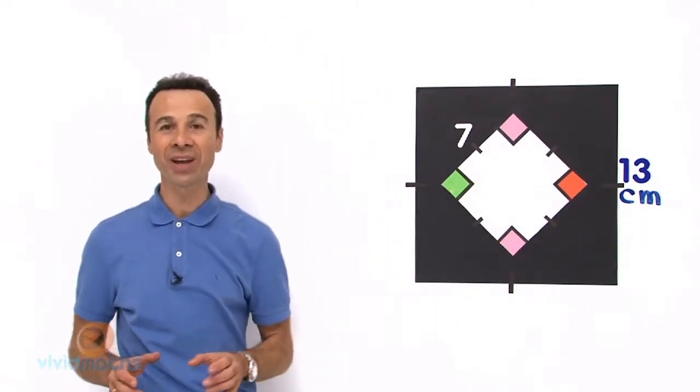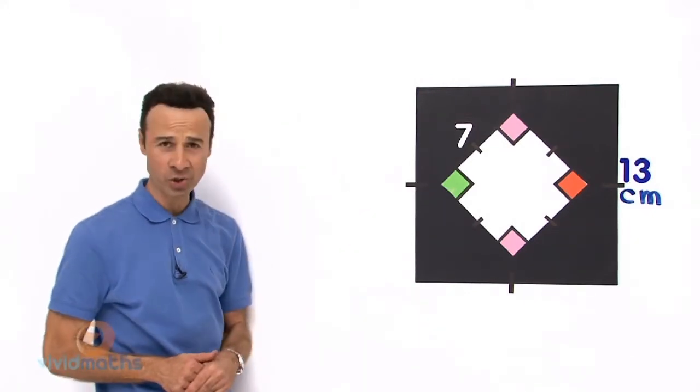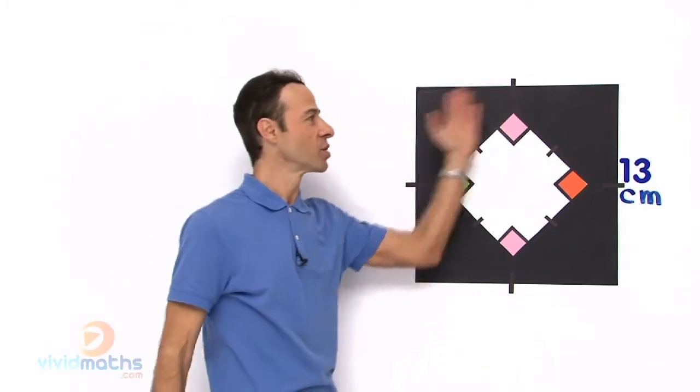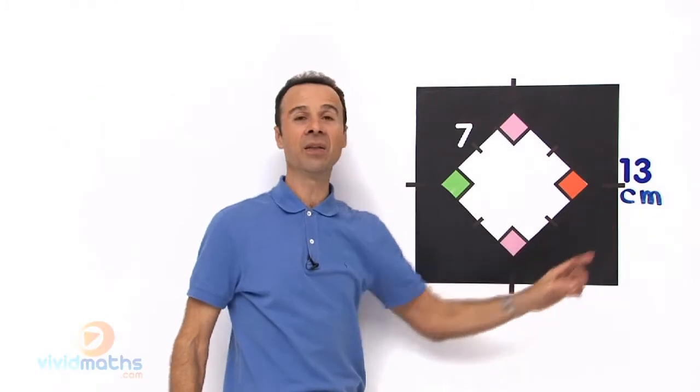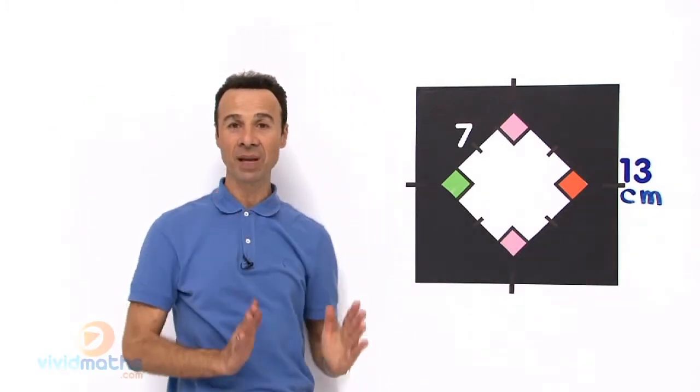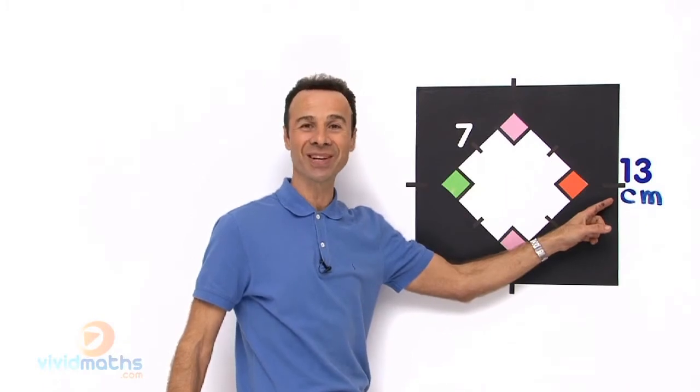Now the way we are going to do this is work out the area of both shapes. Actually both shapes if you take a closer look are squares. This one here is a square - we know that because it has got these lines across here, meaning it is all the same dimensions, which means it is a square and each dimension is 13cm.